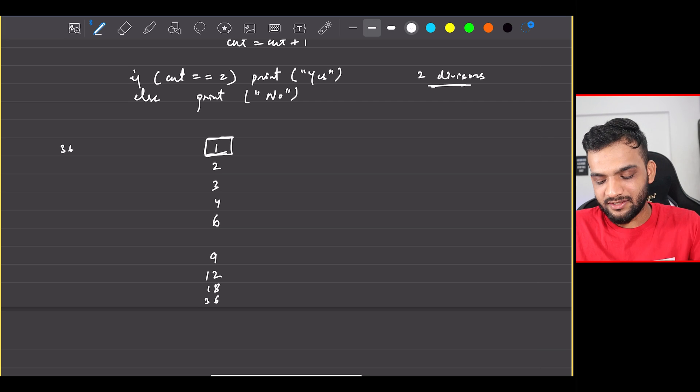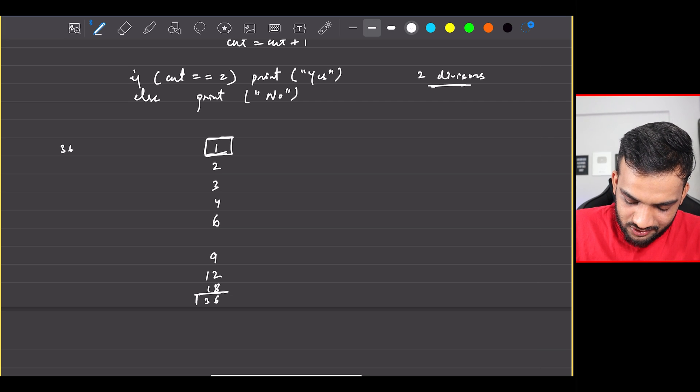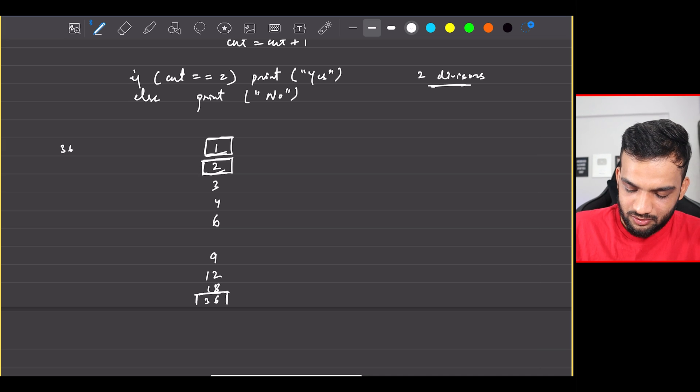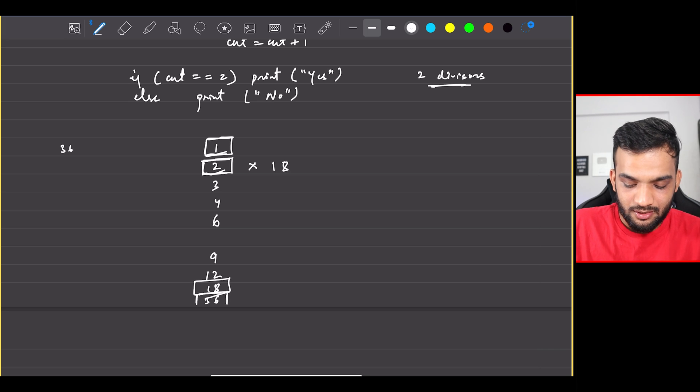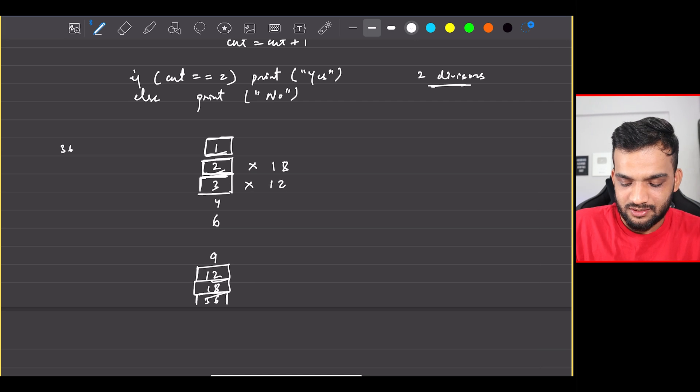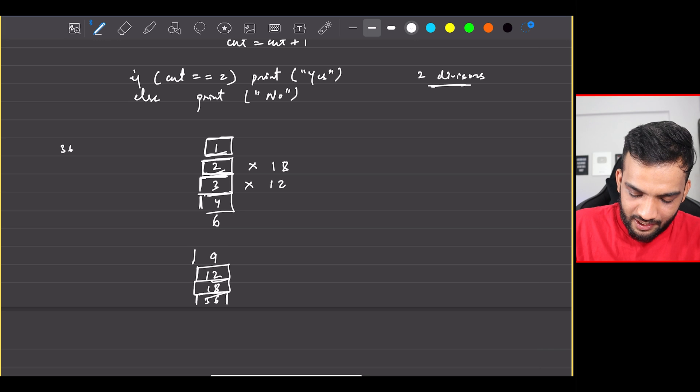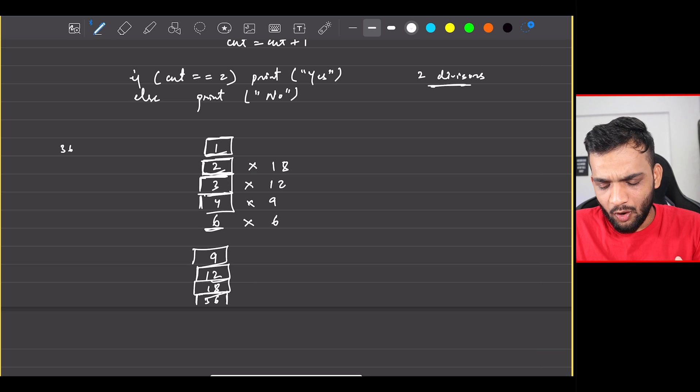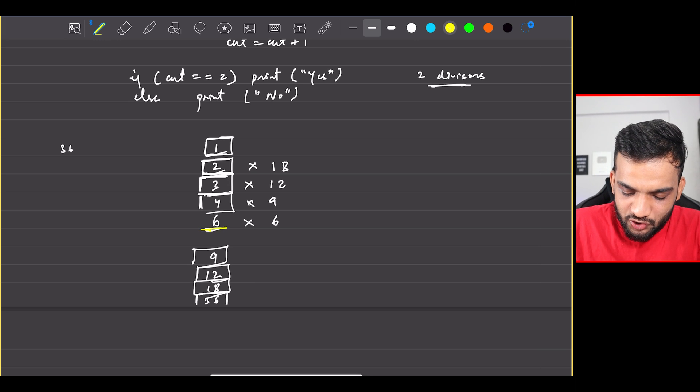And the other divisor was 36. There was a 2 and the other divisor was 18, because 2 into 18 gives you 36. There was a 3 and the other divisor was 12 - 3 into 12 gives 36. There was a 4 and the other divisor was 9 - 4 into 9 gives 36. And for 6, 6 into 6 gives you 36.